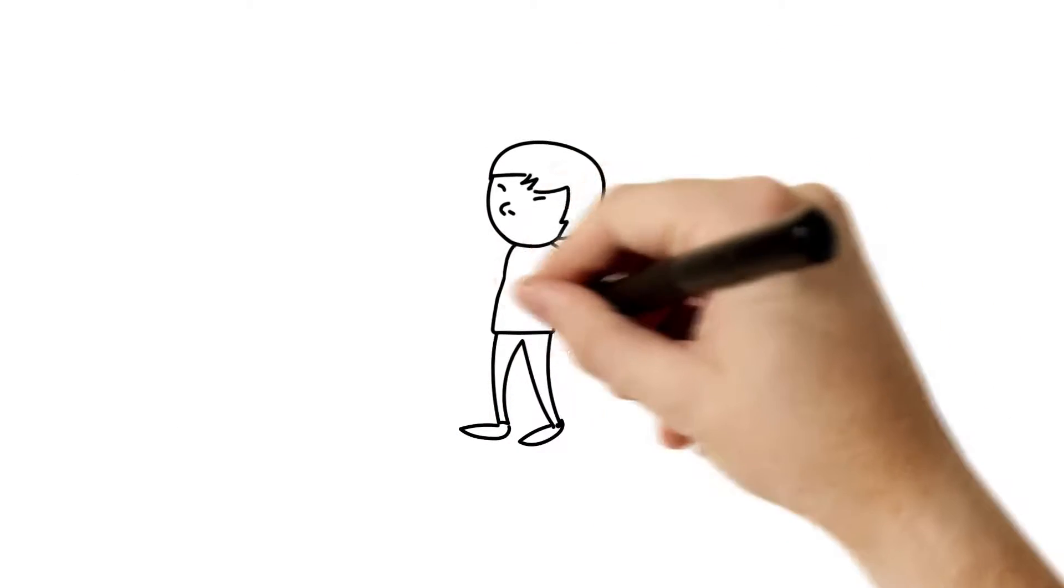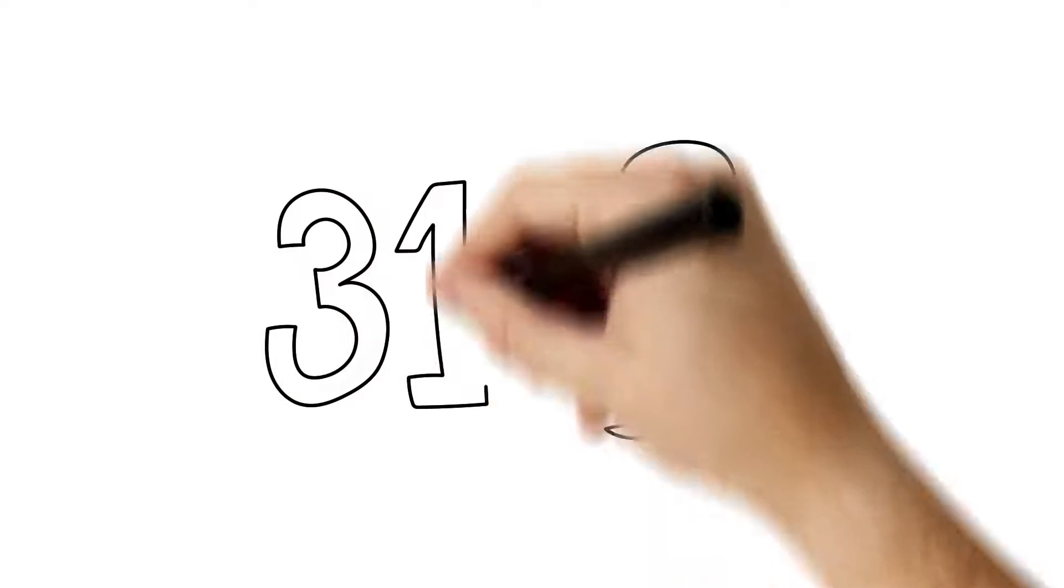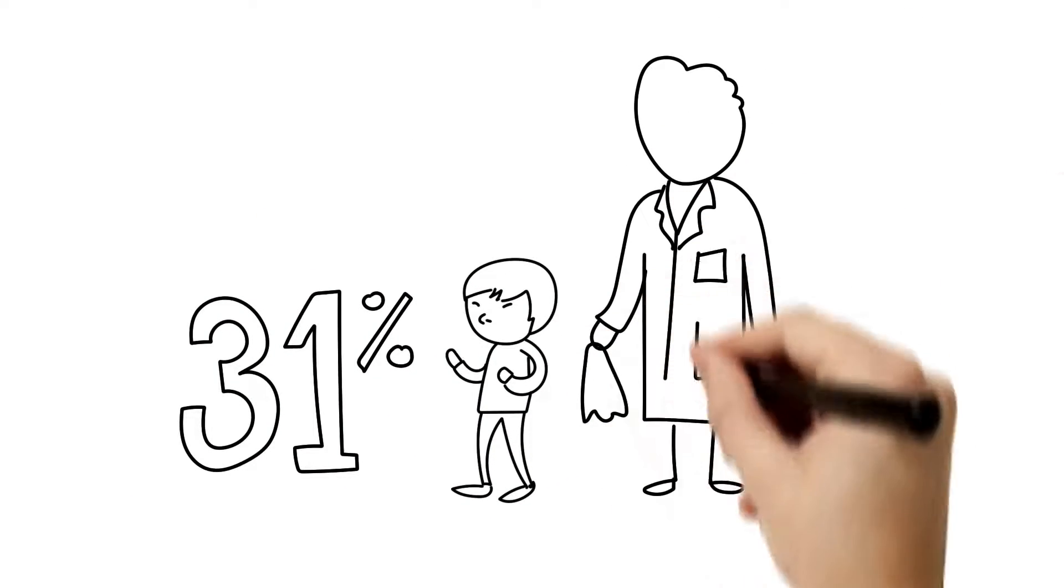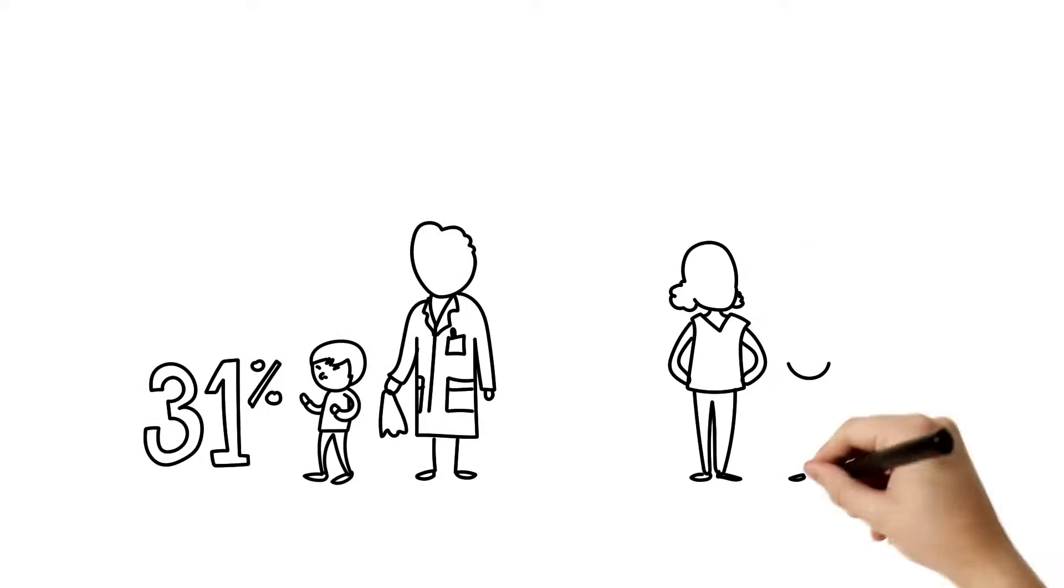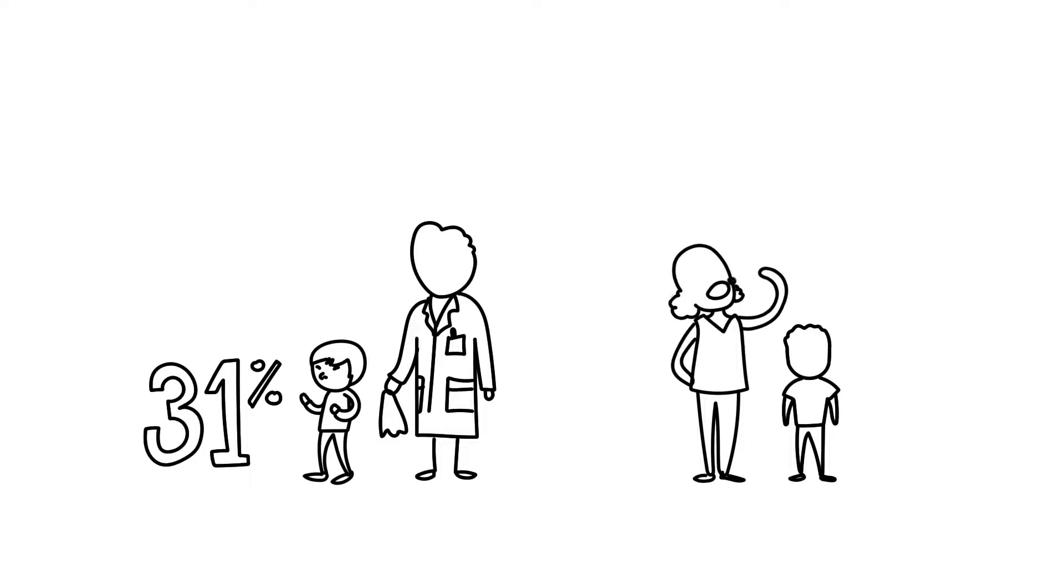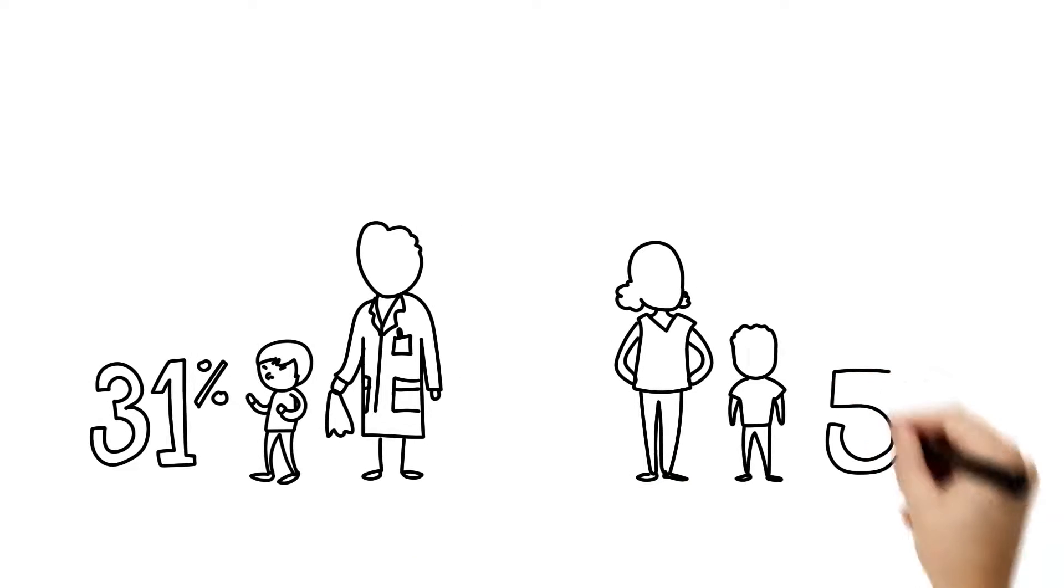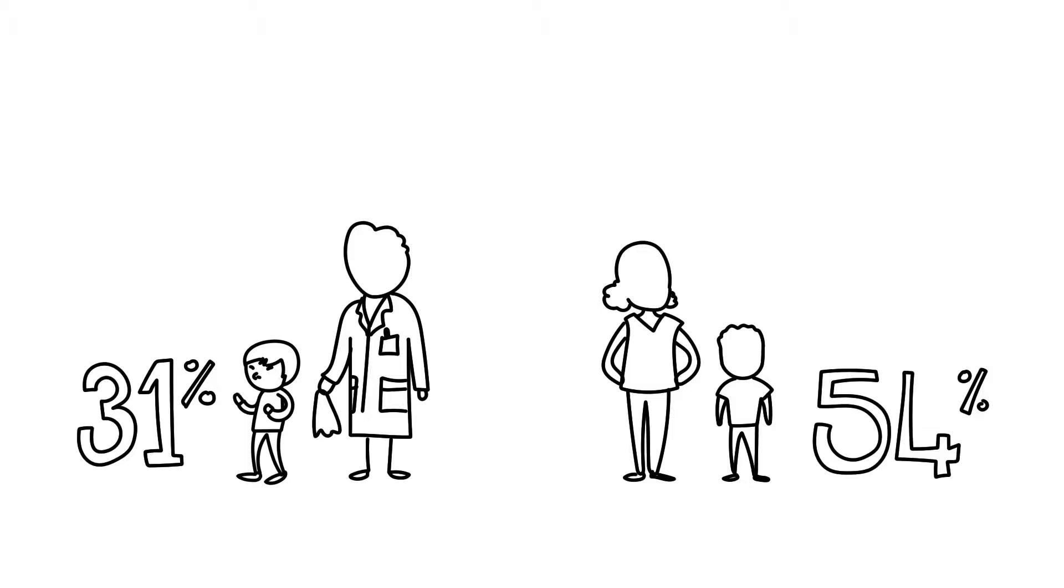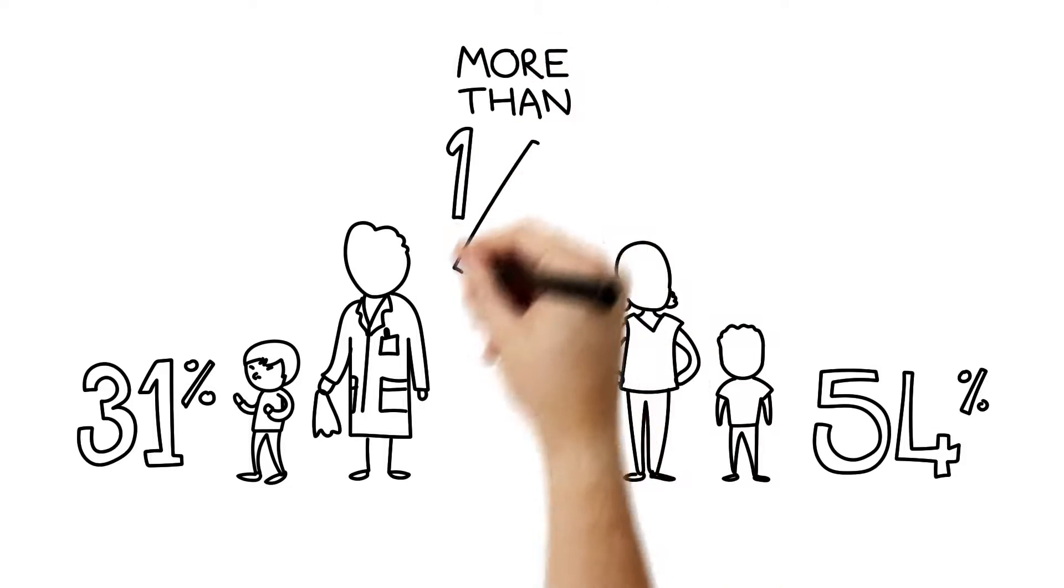The children whose mothers took the supplements had a 31% reduced risk of developing asthma. More surprising, the kids whose moms had the lowest levels of omega-3 in their blood at the beginning of the study had their risk for asthma cut by 54%. That's right, by more than one half.